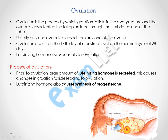What is ovulation? Ovulation is actually a process. As you can see in this diagram, this is the ovary and this is the fallopian tube. In ovulation, the ovary ruptures and the ovum gets released from the ovary. The ovum enters into the fallopian tube through the fimbriated end of the tube, which receives the ovum after ovulation.